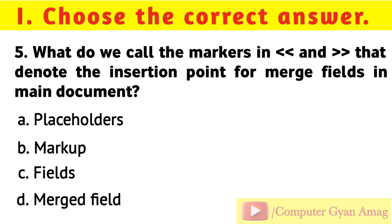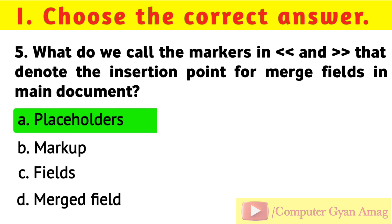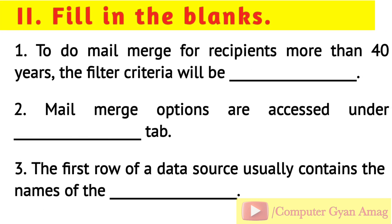Question 5: What do we call the markers in << and >> that denote the insertion point for merge fields in the main document? Your options are: A) Placeholders, B) Markup, C) Fields, D) Merged Field. Correct option is A: Placeholders.